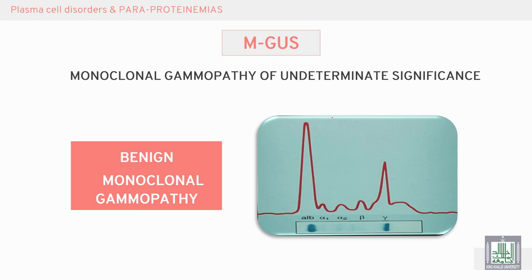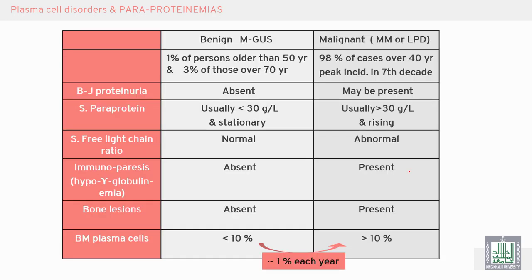Monoclonal gammopathy of undetermined significance (MGUS) is a benign monoclonal gammopathy. We can see the difference between the impact in benign MGUS and in malignant monoclonal gammopathy, illustrated in a comparison table. Malignant disease occurs in multiple myeloma, Waldenström's macroglobulinemia, or lymphoplasmacytic disease.